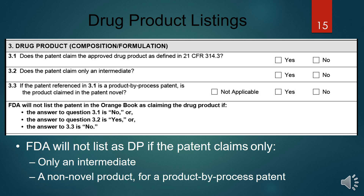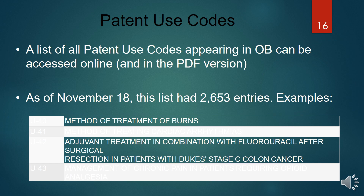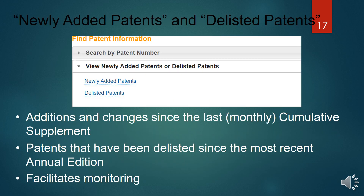The FDA will not list a patent in the Orange Book if the patent claims only a fully intermediate or non-novel product. A list of all patent use codes can be seen in the Orange Book, accessible online either in PDF version. For example, if you search for drugs used for burns, you can get around 2,000 entries.